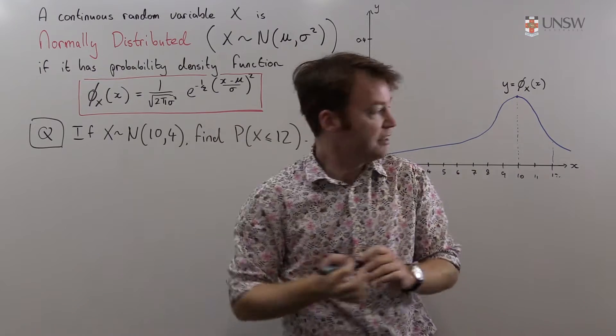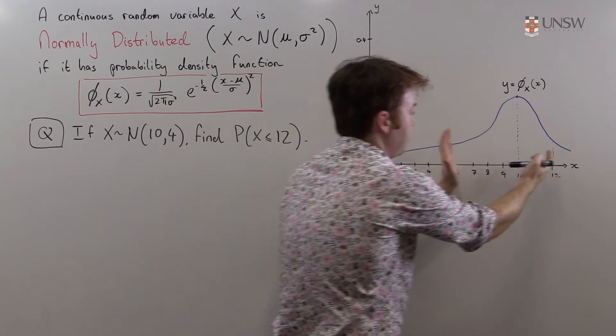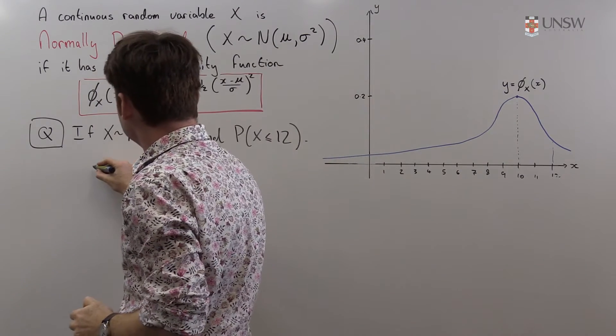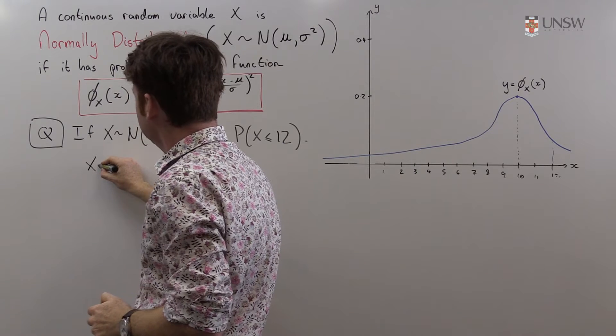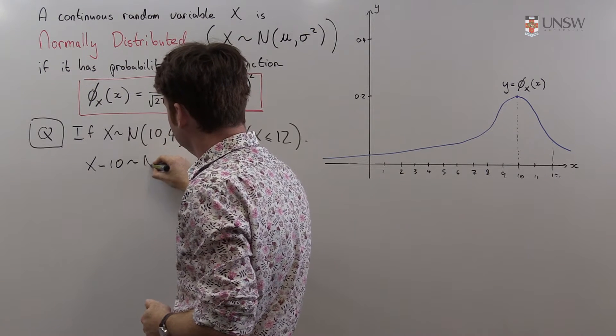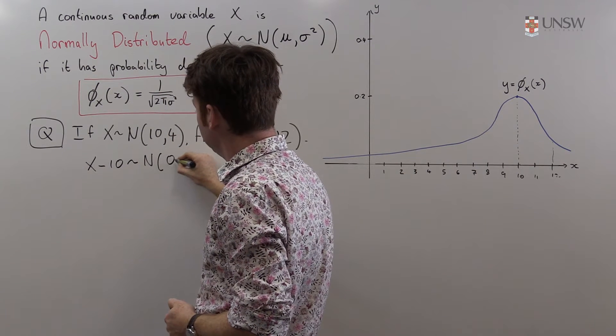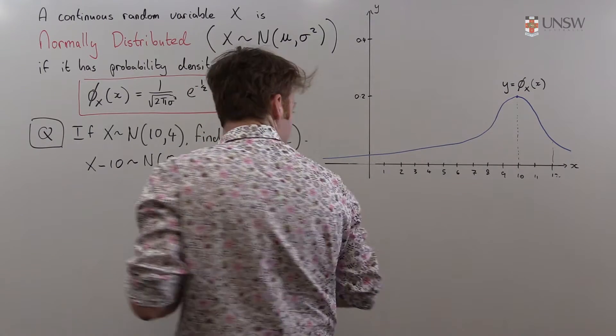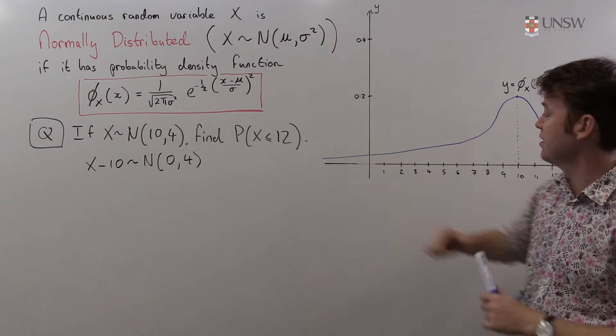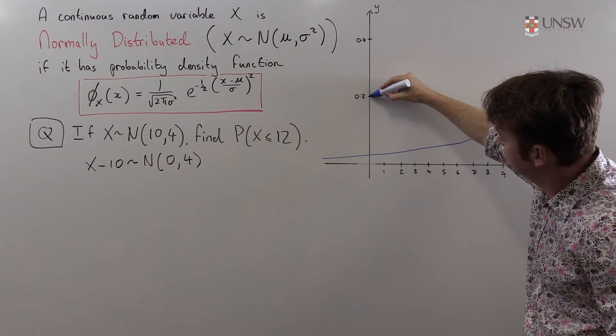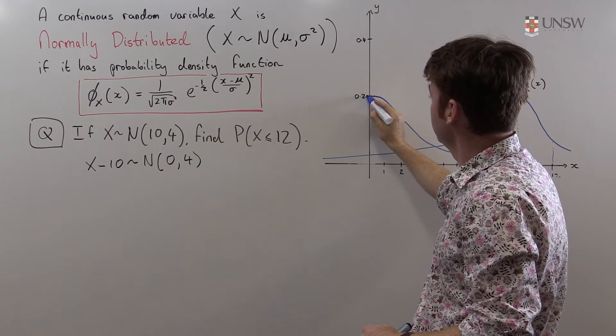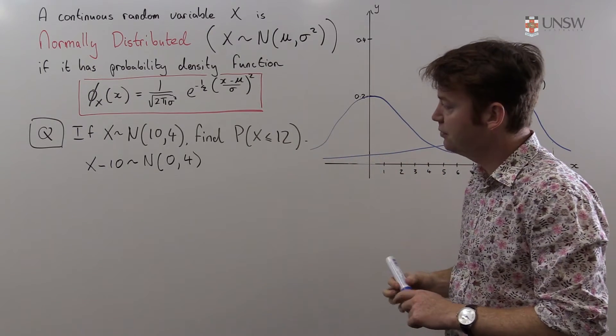The first thing we're going to do is take this whole graph over here and shift it so that its expected value is 0. What that means is, well I can do that quite easily, that's X minus 10. Just take away 10 from everything, that's going to be normally distributed with expected value 0 and I haven't changed the variance at all. Visually what I've just done is I've taken this whole curve and just moved it down, so it looks like this. It's kind of a fat normally distributed curve like that.